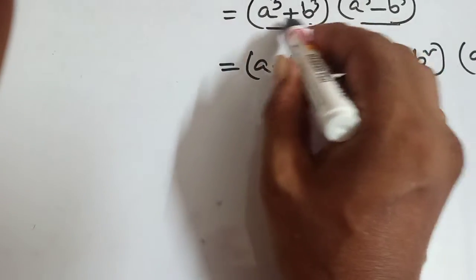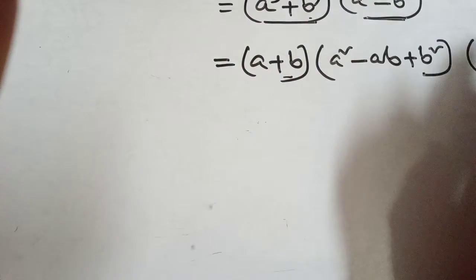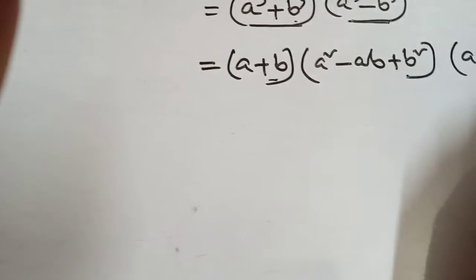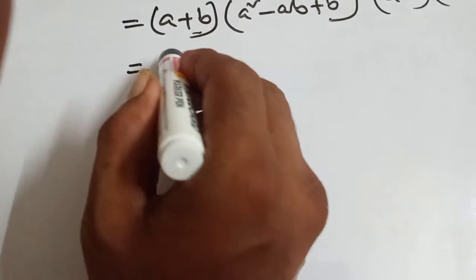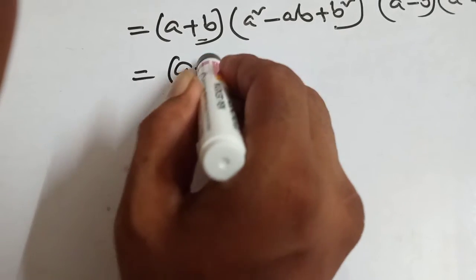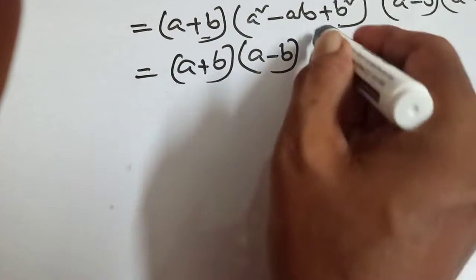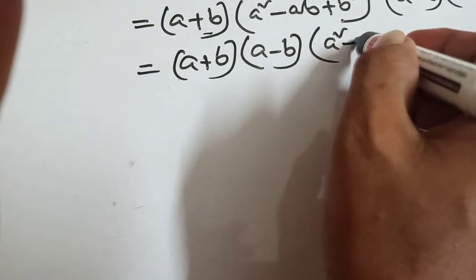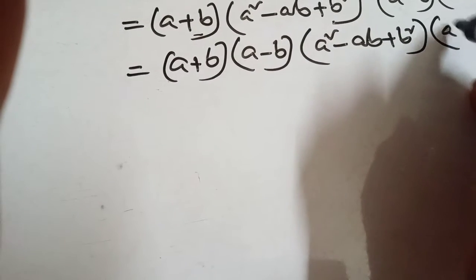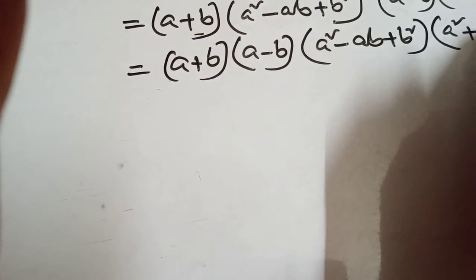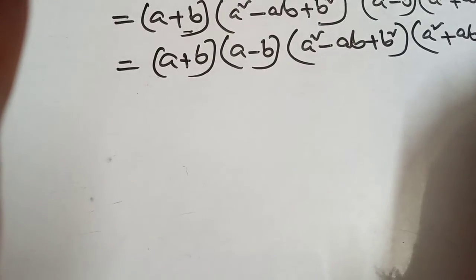A cube minus B cube formula is A minus B into A square plus AB plus B square. Now arrange it: A plus B into A minus B into A square minus AB plus B square into A square plus AB plus B square. This is the answer.